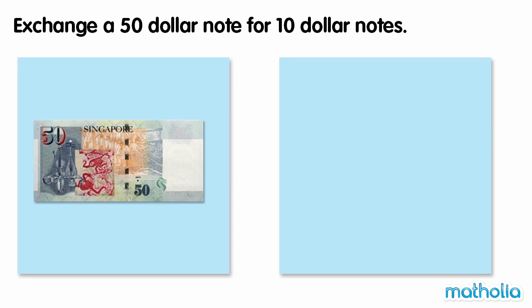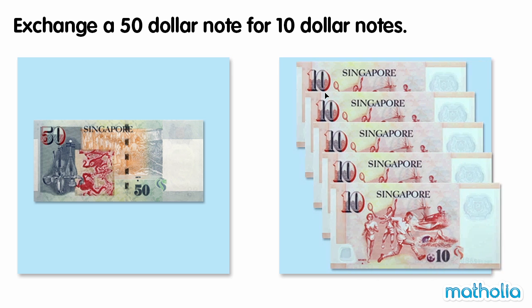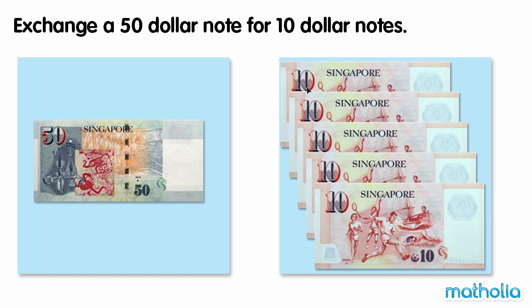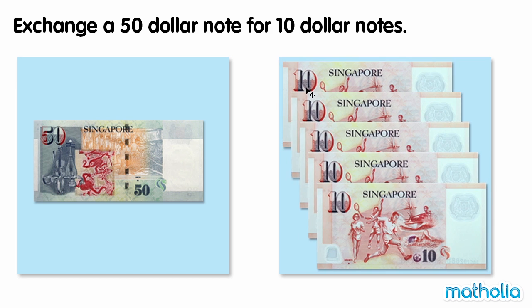Exchange a $50 note for $10 notes. 50 is equal to 5 tens, so $50 is equal to 5 $10 notes. We can exchange a $50 note for 5 $10 notes.